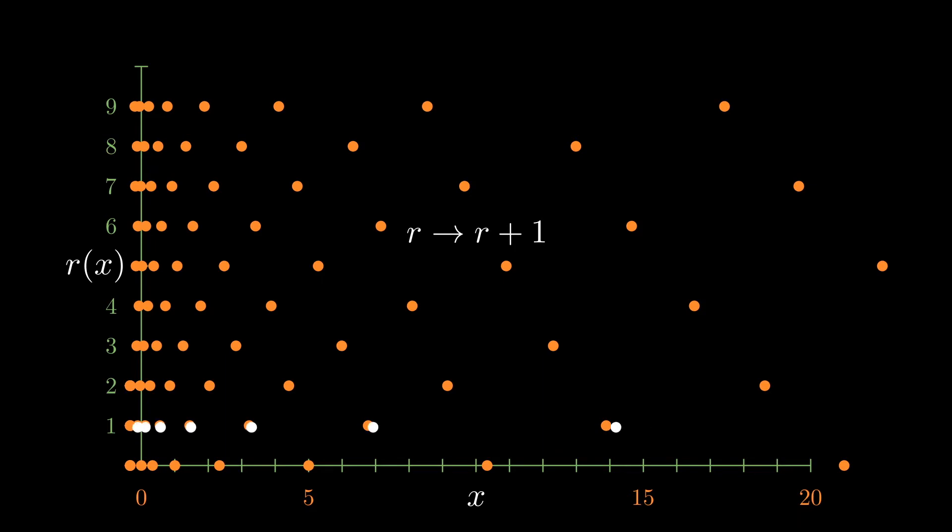And then whenever I increase the value of r in the sigma equation, this is what these points look like. They just sort of progress upward. So anytime you plug in an integer value for n and r, you just end up with one of these orange dots.